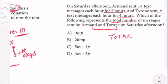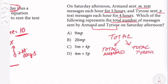What would the total comprise of? It would comprise of the total number that Armand sent and the total number that Tyrone sent, right? So what's the total number that Armand sent?